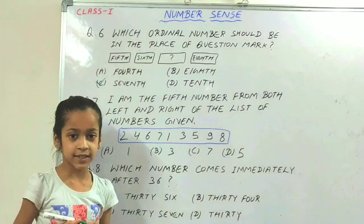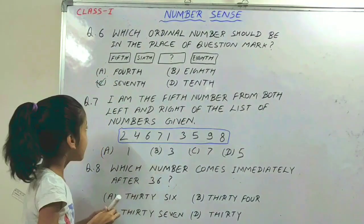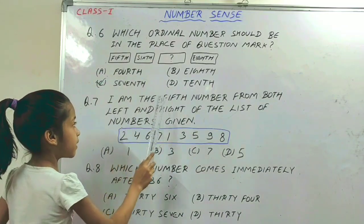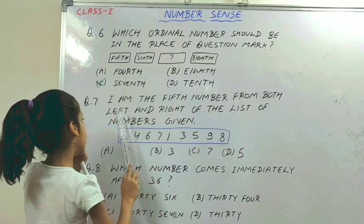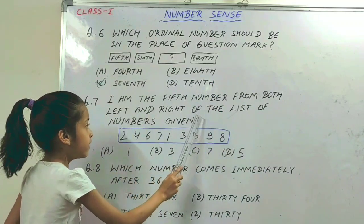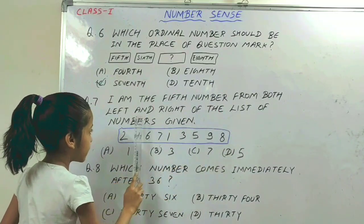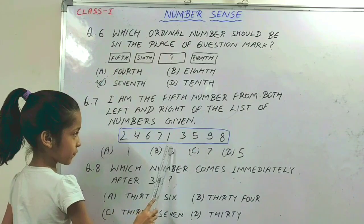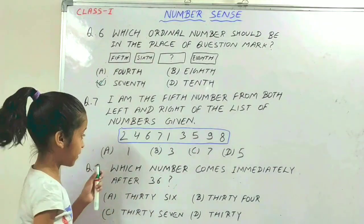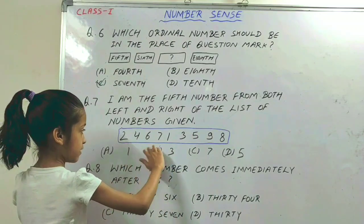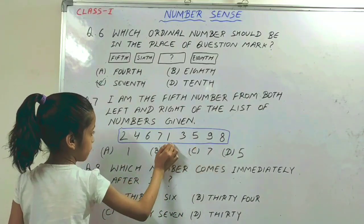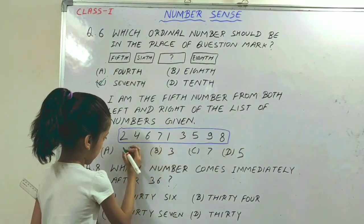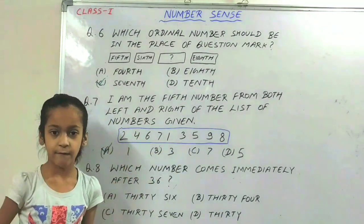The next question is: I am the 5th number from both left and right of the list of numbers given. As you can see, 1 is 5th from the left and 1 is 5th from the right. So the answer is 8th.